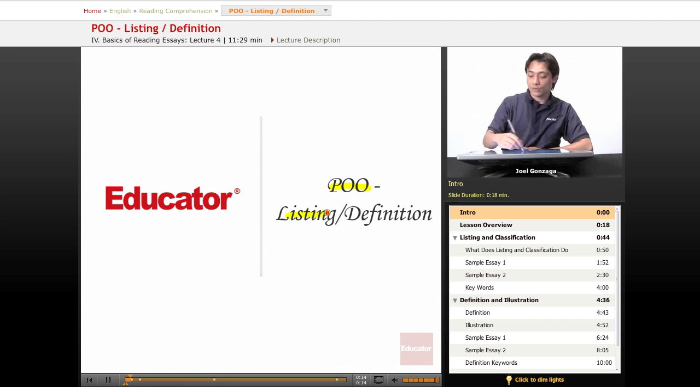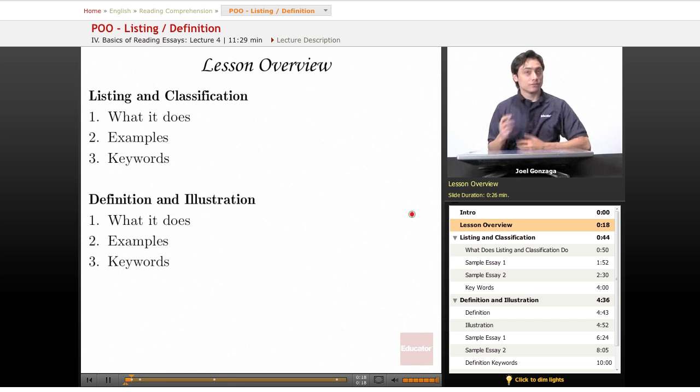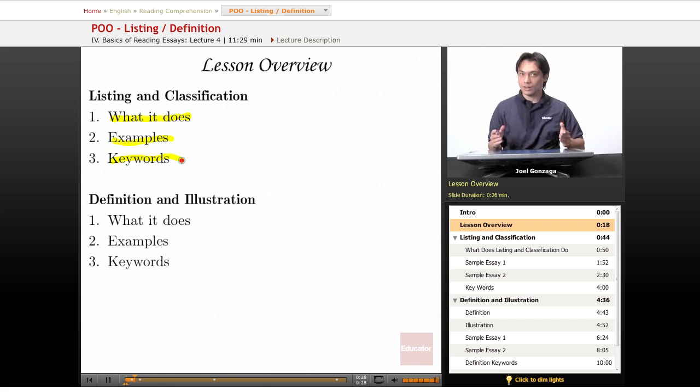For this lesson, we are going over listing and definition. The overview is very simple. We have listing and classification: what it does, examples, and finally the keywords that let you know this essay is organized according to listing and classification.